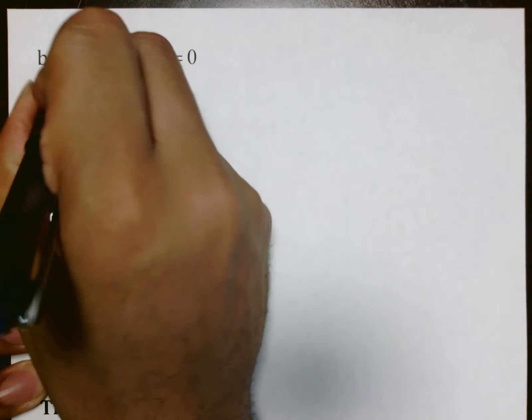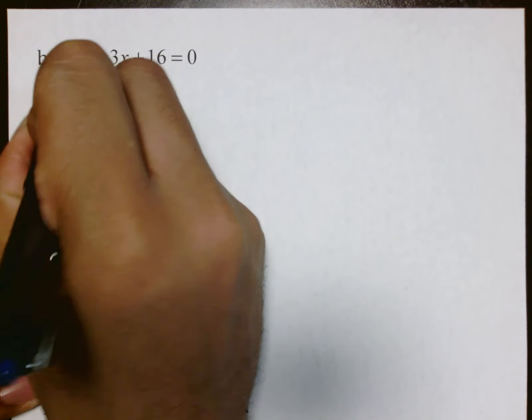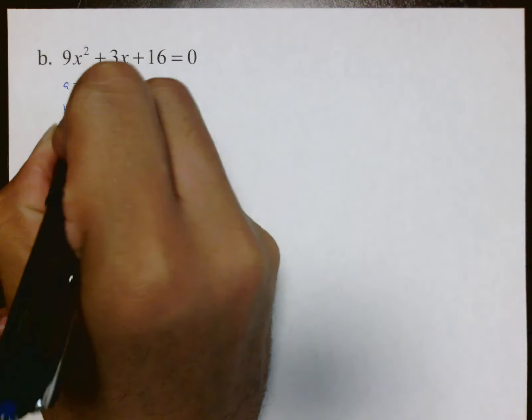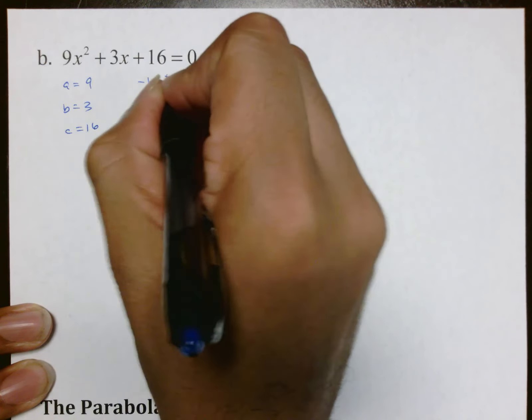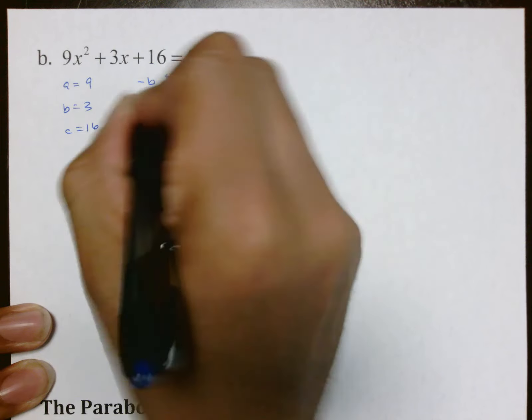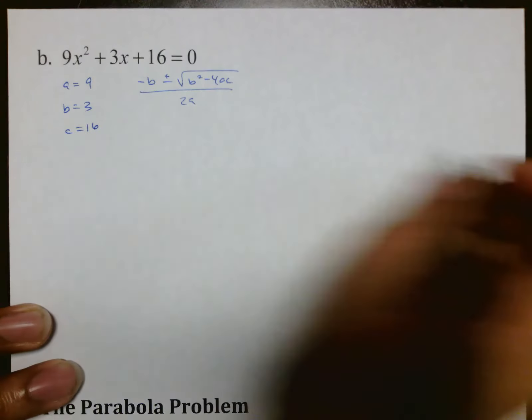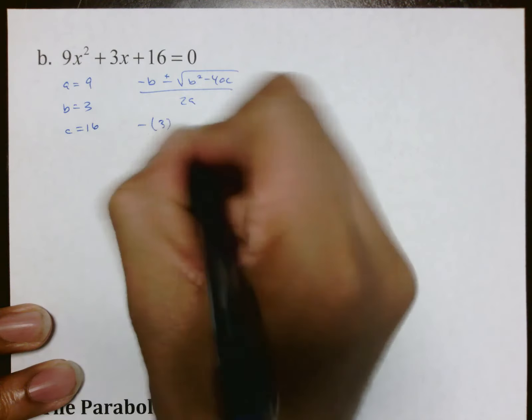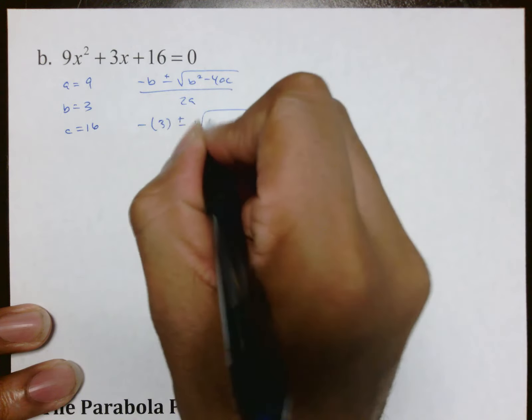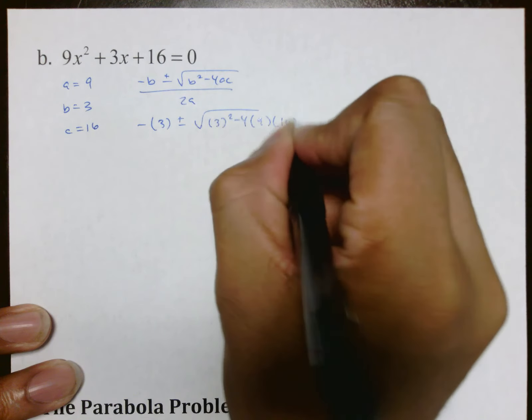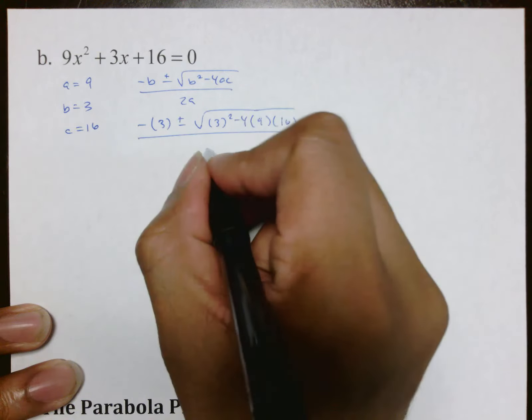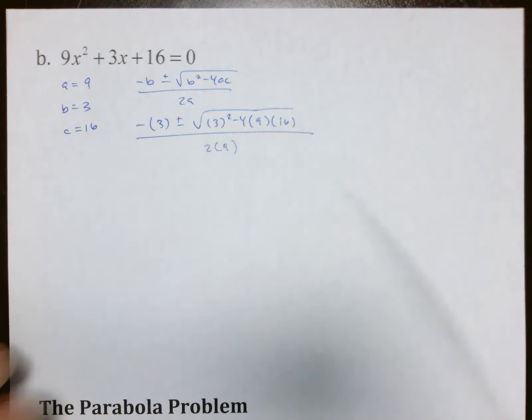This one here again, going through the same sequence, a is 9, b is 3, c is 16. Formula is negative b plus or minus root b² minus 4ac all over 2a, which is negative (3) plus or minus 3² minus 4, 9, and 16 all over 2 times 9.